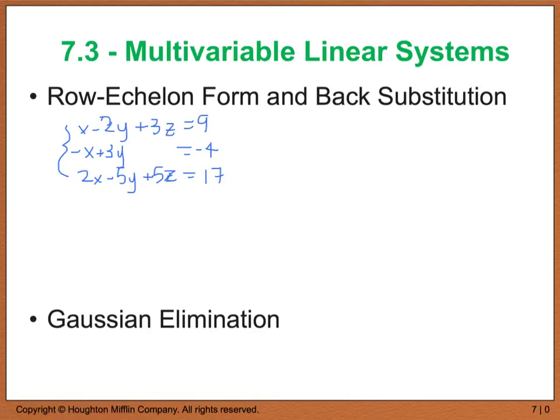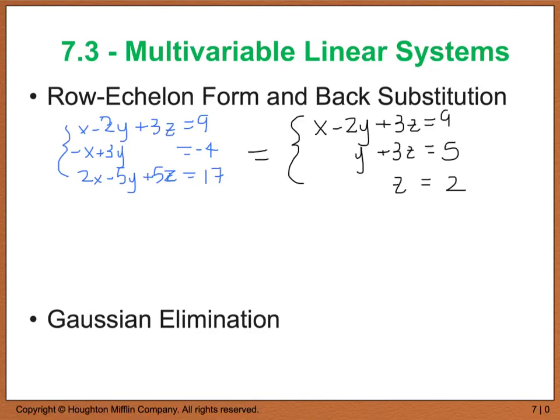I'm going to show you how to solve this. If I gave you a system like x minus 2y plus 3z equals 9, negative x plus 3y equals negative 4, and 2x minus 5y plus 5z equals 17, I'm going to show you how to work your magic to get the system into what we call row echelon form, which looks like this: x minus 2y plus 3z equals 9, y plus 3z equals 5, and z equals 2.